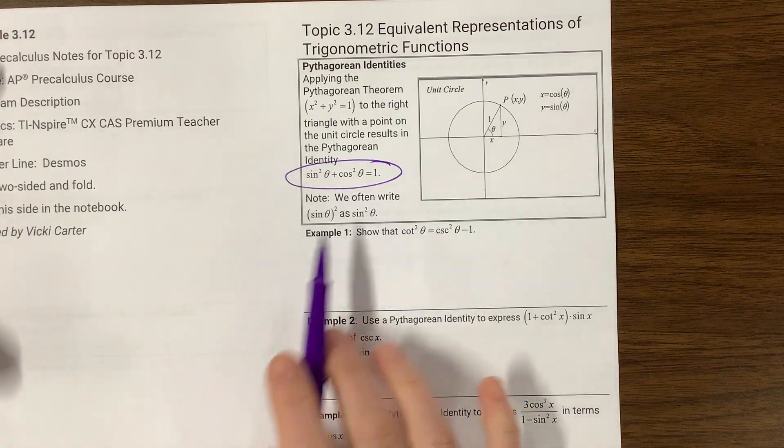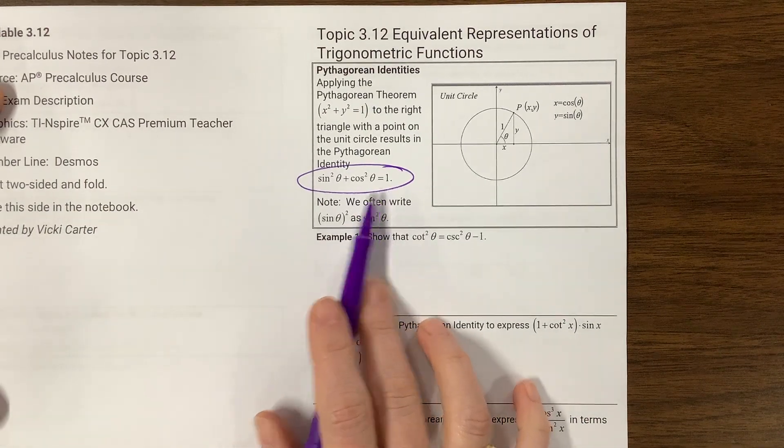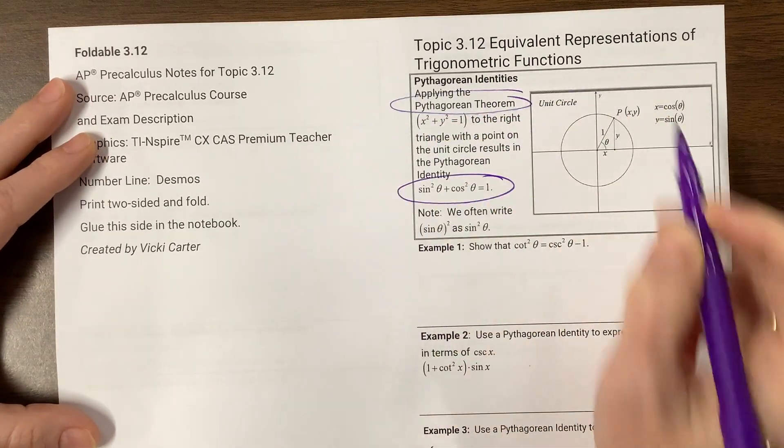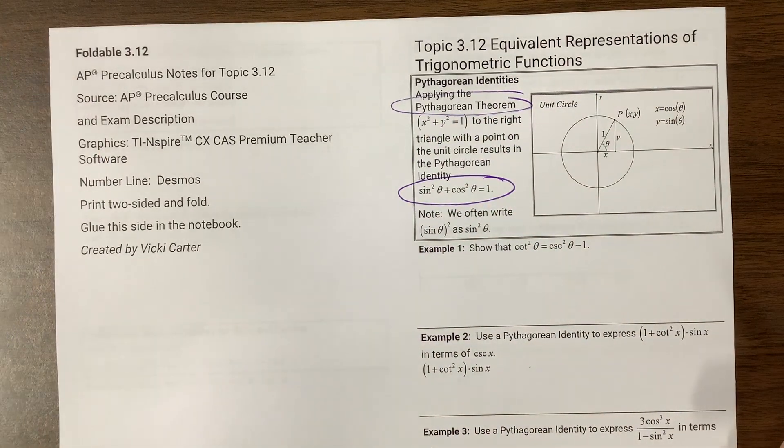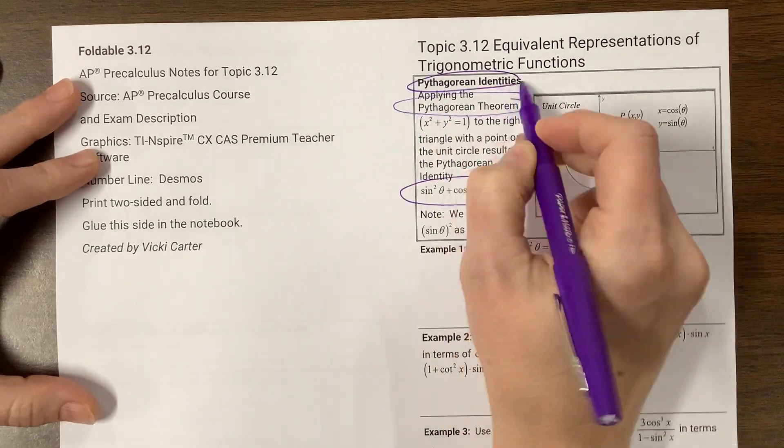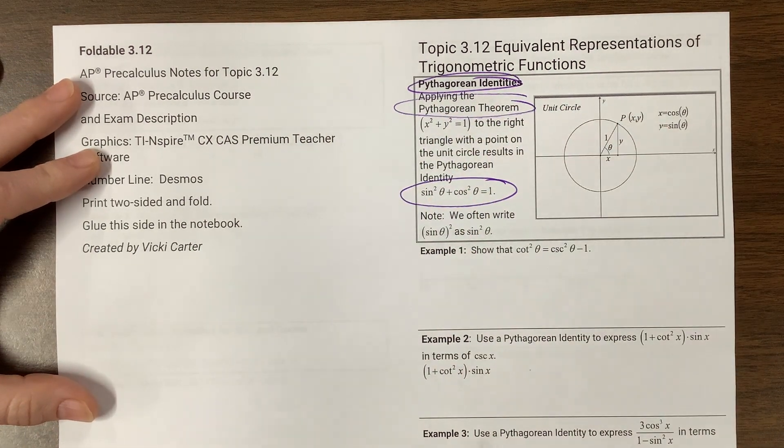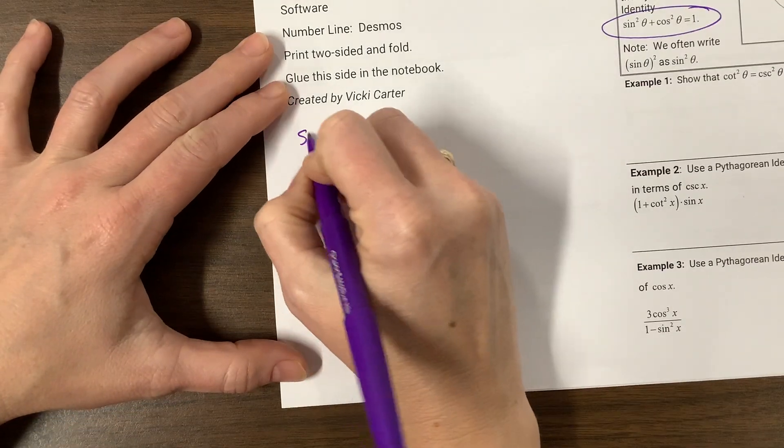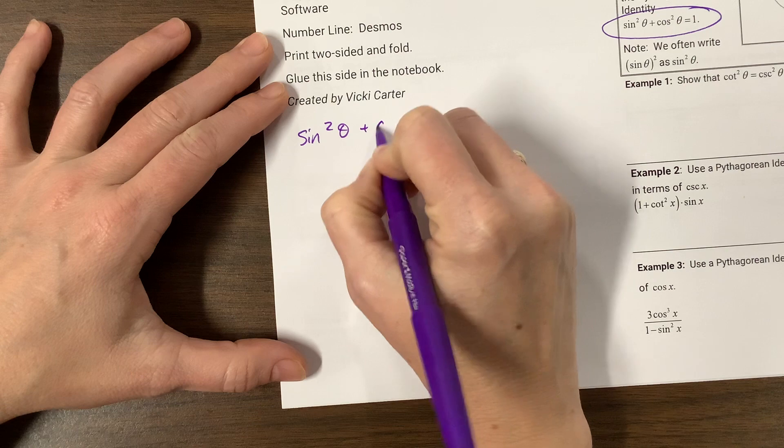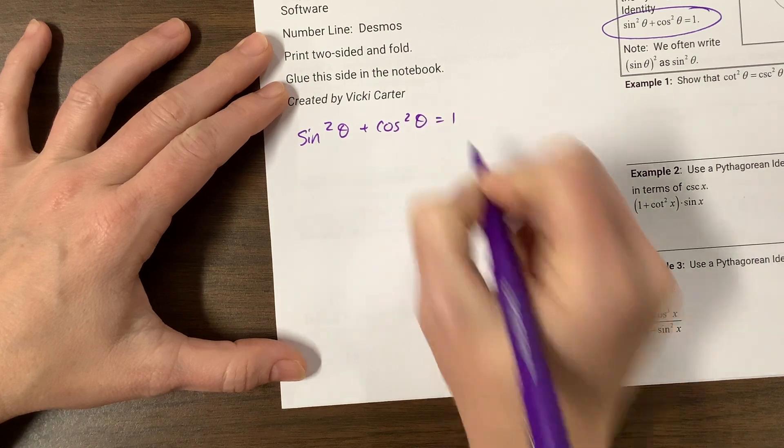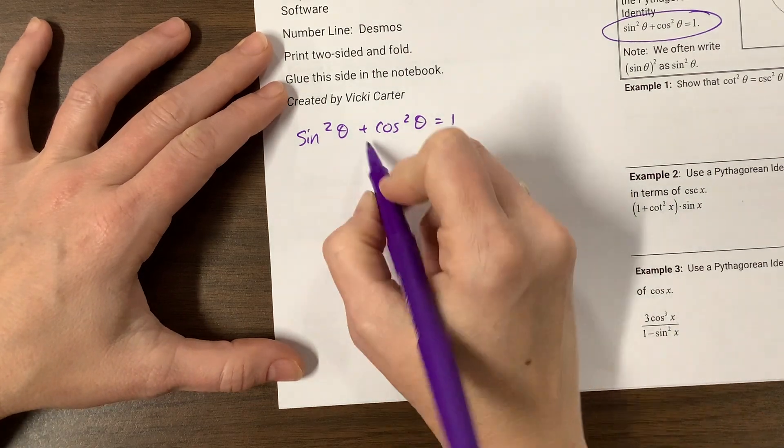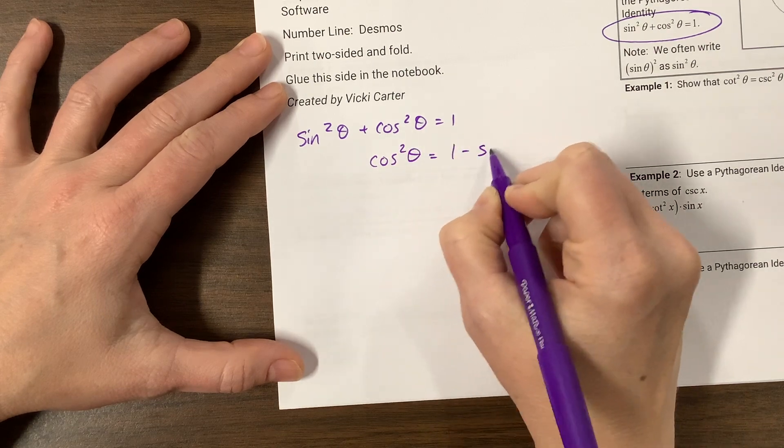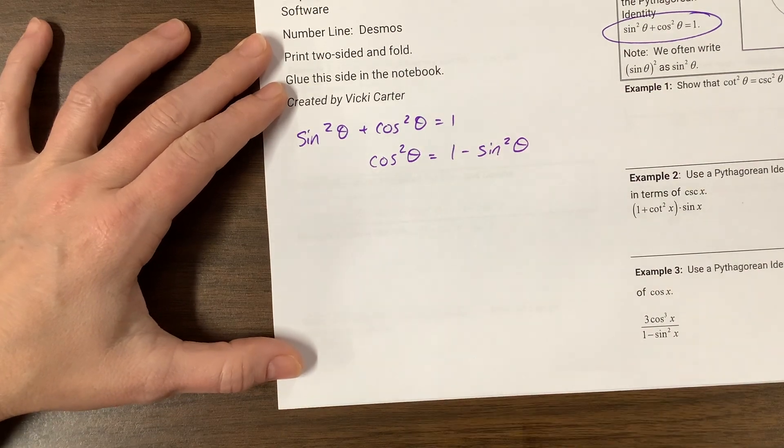And so what I do when I teach this initially is then I come through, and we nickname it the Big Daddy, but it's a Pythagorean identity. And then there's a few others. So we can always, what I'll do when I teach this is I'll come along and say sine squared plus cosine squared theta equals one. I can solve for different things. So if I solve for cosine squared, that's equal to one minus sine squared. One thing I want to make very clear to you,